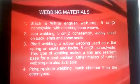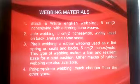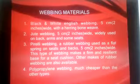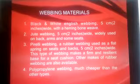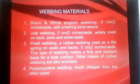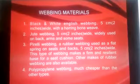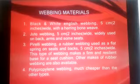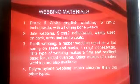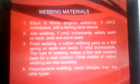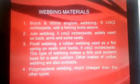The first webbing material is black and white English webbing, which is 5 cm (2 inches) wide and has a herringbone weave — considered a very strong material for webbing. The second is jute webbing, also 5 cm (2 inches) wide, and can be used at the back, arms, and seats of furniture. The third is Pirelli webbing, a rubber webbing used as a flat spring on seats and backs, also 5 cm (2 inches) wide, making a firm and resilient base for a seat cushion.